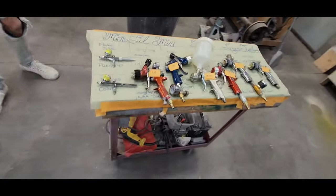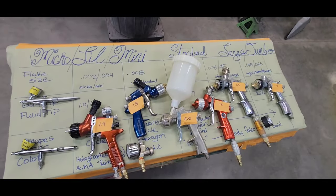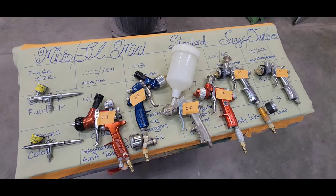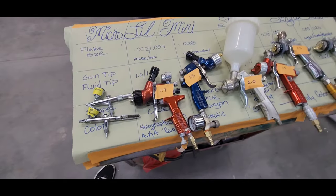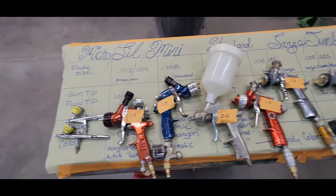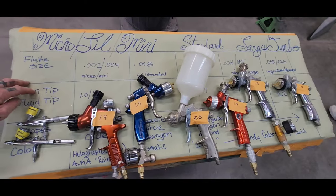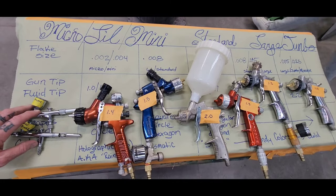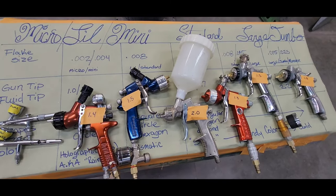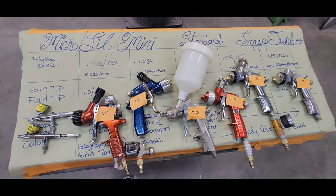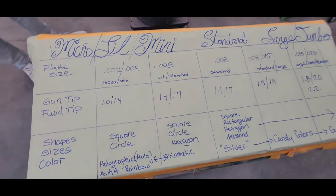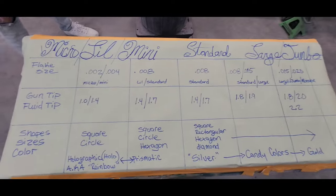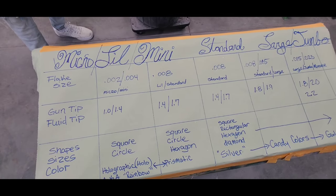Anyways, I want to talk about some metal flake. So I want to try and break down some metal flake sizes and fluid tip sizes that you should be using with your metal flake. So you can hear what I say, but don't take my word for it.